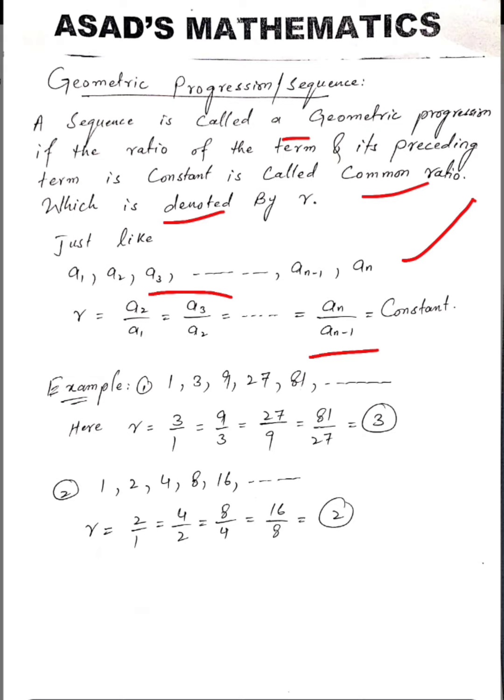For example, first example: 1, 3, 9, 27, 81. We check whether this sequence is a geometric sequence or not.